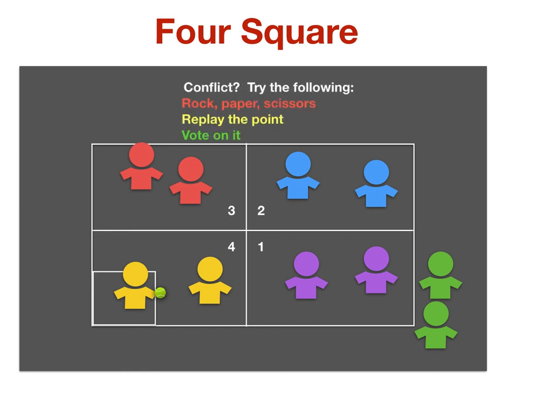As in any game, if there's a question about who is out or if the ball is in or out, try the following: rock paper scissors, replay the point, or vote on it. Doing this makes everyone happy, and we can all enjoy four square.